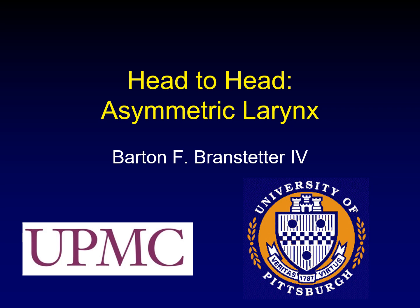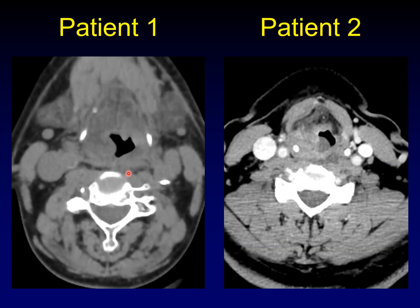In the head-to-head series, I show you two different patients with two different diseases that have a similar radiologic appearance. Here are the two patients. You can see there is something asymmetric about the supraglottis, where one side is thicker than the other side. This would be a good time to pause the video, look at these images, and decide what you think is going on in each of these two cases.